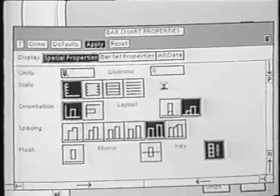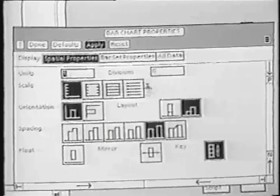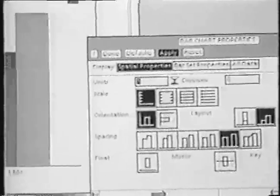We could have also, for instance, changed the appearance of the scale or the number of ticks displayed. The bar chart then reformats itself according to the new specifications.